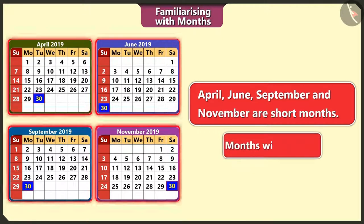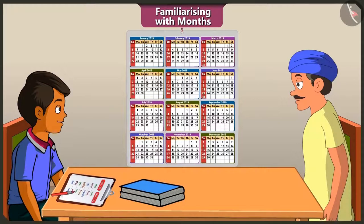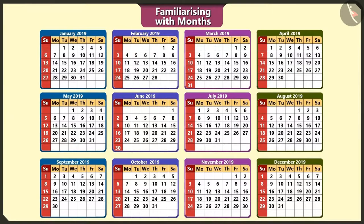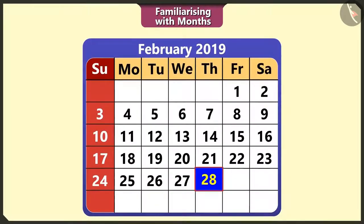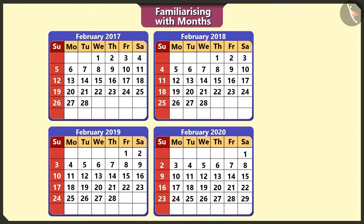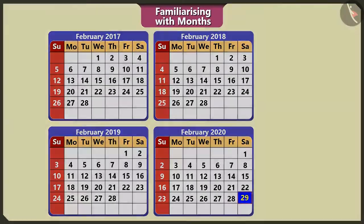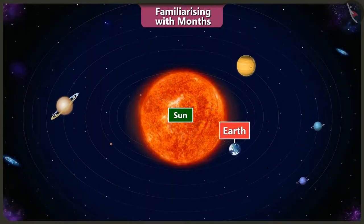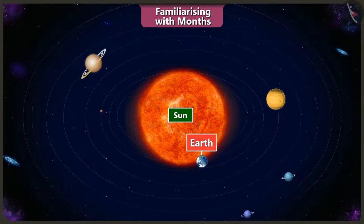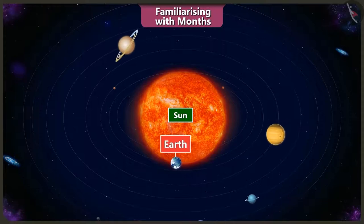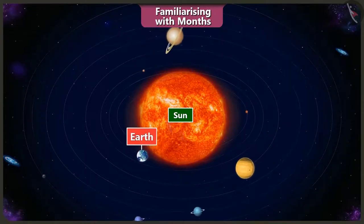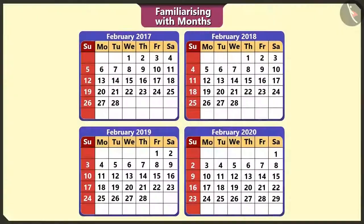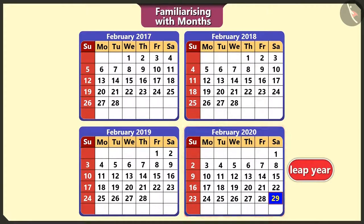Hey, you did not tell how many days are there in the month of February. Chotu, February is the shortest month. Normally, there are 28 days in February. But once in every four years, there are 29 days in February, because it takes 365 days and 6 hours for the earth to complete one revolution around the sun. These remaining six hours of every year added together for four years becomes one day. So every fourth year, the month of February has 29 days, which is called a leap year.